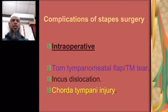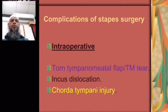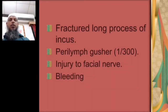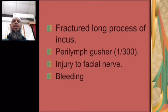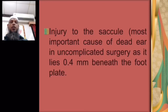Complications of stapes surgery: number one — tympanic membrane tear. Number two — incus dislocation. Number three — chorda tympani injury. Number four — fracture of the long process of the incus. Number five — perilymph gusher. Number six — injury to the facial nerve. Number seven — bleeding. Number eight — injury to the saccule, which is the most important cause of dead ear in uncomplicated surgery as it lies 0.4 mm beneath the footplate of the stapes.